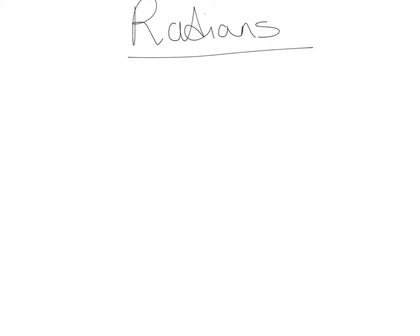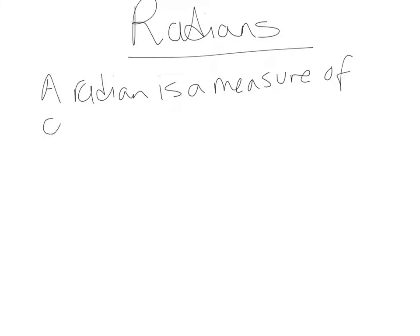This video introduces radians. We should all be familiar with measuring the size of angles using degrees. However, there is another way that we can measure angles and this is called radians. A radian is a measure of circular motion, and we can measure angles in this.